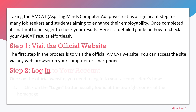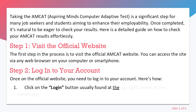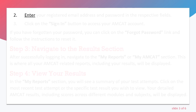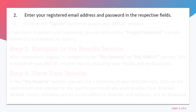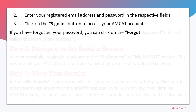Step 2: Log into your account. Once on the official website, you need to log into your account. Click on the login button, usually found at the top right corner of the homepage. Enter your registered email address and password in the respective fields, then click on the sign in button to access your AMCUT account. If you have forgotten your password, click on the forgot password link and follow the instructions to reset it.